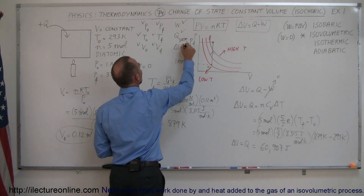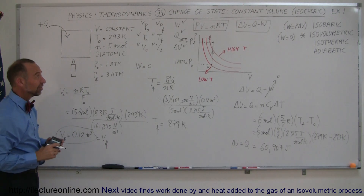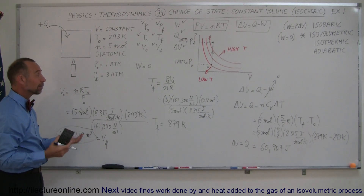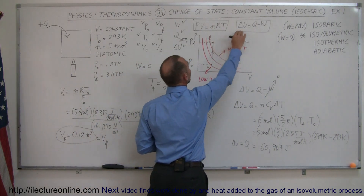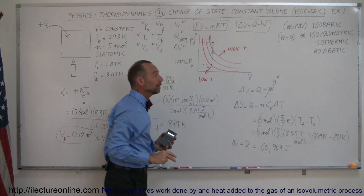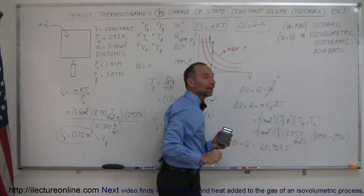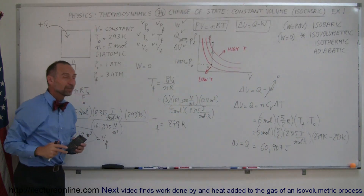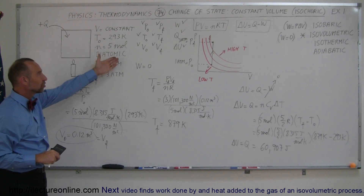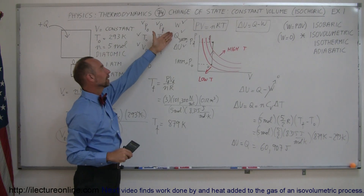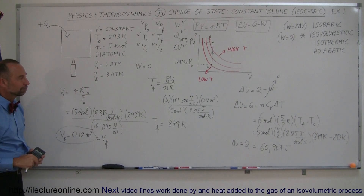So now we know Q, ΔU, and W — the entire problem is solved. In thermodynamic processes like this, by using PV = nRT and ΔU = Q − W, combined with knowledge of what's specific to the process, you can figure out any state variable — initial or final — as well as work done, heat added, and change in internal energy.